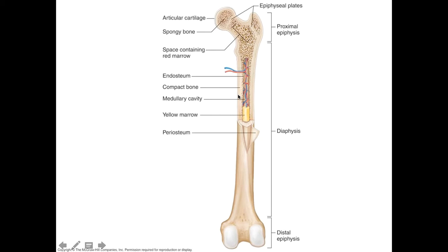Bone is vascular, and therefore depends on a constant supply of blood and nourishment. It has a need for vessels as well as nerves to enter the bone. These areas where vessels can enter are referred to as nutrient foramina. On your long bones there are typically one or two of these really small openings where blood vessels would have entered, and hopefully you can find those on the femurs in class.